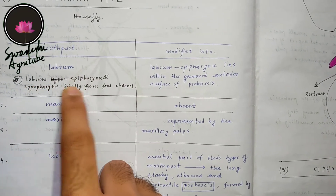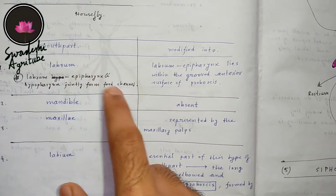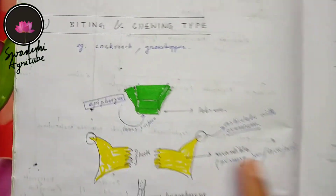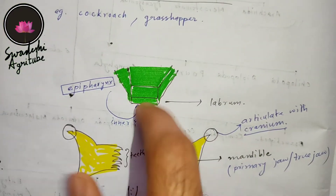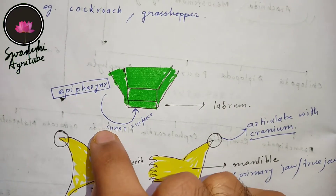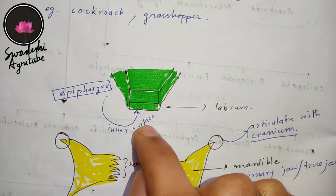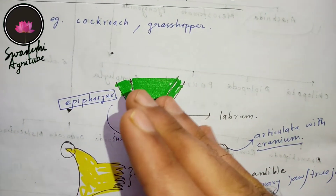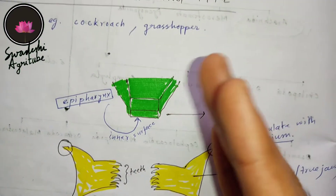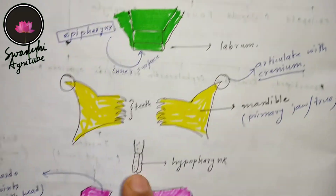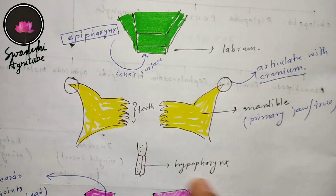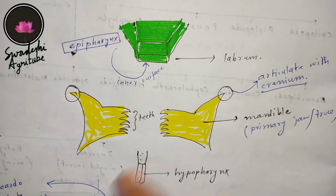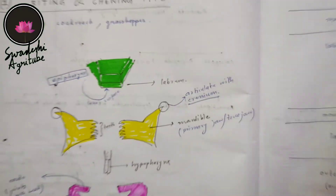First, the labrum — the epipharynx and hypopharynx jointly form a food channel. If you remember the diagram, the labrum is denoted by green color, and the inner surface of the labrum is called the epipharynx. In the case of sponging type mouthparts, the epipharynx and hypopharynx — the tongue of the insect — form one food channel.